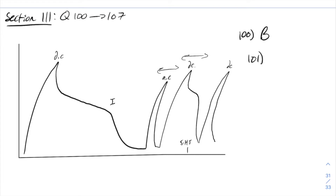If we look at question 101, it says: of the following, the figure indicates most clearly that... Going through the options: A says 5-hydroxytryptamine rapidly overcomes the effect of DC stimulation. If we look at when 5-HT is administered, we can see that the prolonged contraction under DC stimulation comes to an end much quicker than it did on the other side of the diagram. So that could be an answer.